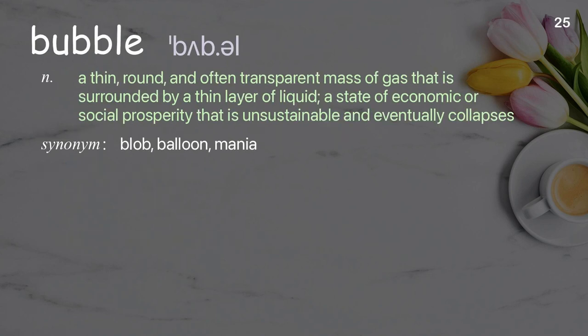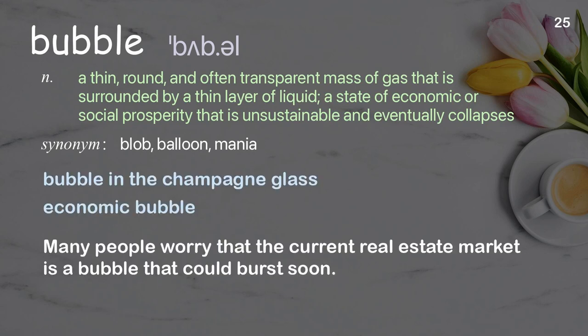Bubble: A thin, round, and often transparent mass of gas that is surrounded by a thin layer of liquid; a state of economic or social prosperity that is unsustainable and eventually collapses. Examples: bubble in the champagne glass, economic bubble. Many people worry that the current real estate market is a bubble that could burst soon.